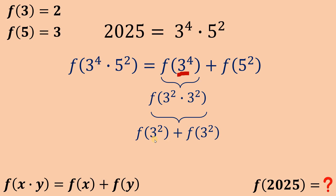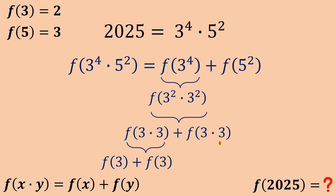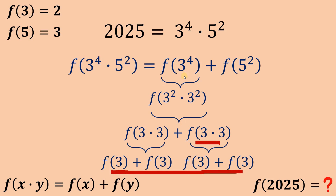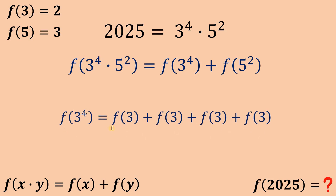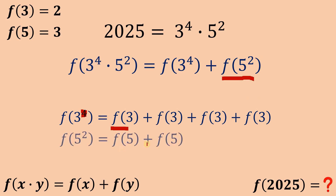Now, 3 squared is 3 times 3, so f(3 times 3) can be rewritten as f(3) plus f(3). We also have another f(3) plus f(3). From this, f(3⁴) simply equals f(3) added 4 times — notice that 4 is the exponent of 3. Similarly, f(5²) equals f(5) added 2 times.